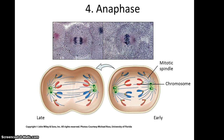In anaphase, the chromosomes will be pulled apart, with one chromatid going toward one centrosome and the other chromatid going to the other centrosome. At this point they're no longer called chromatids — they're now called chromosomes. So you have two copies of the genetic material being sent to opposite sides of the cell.